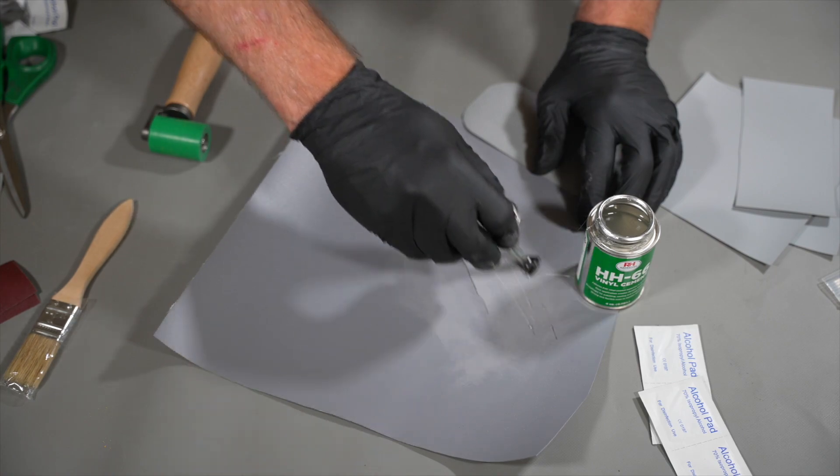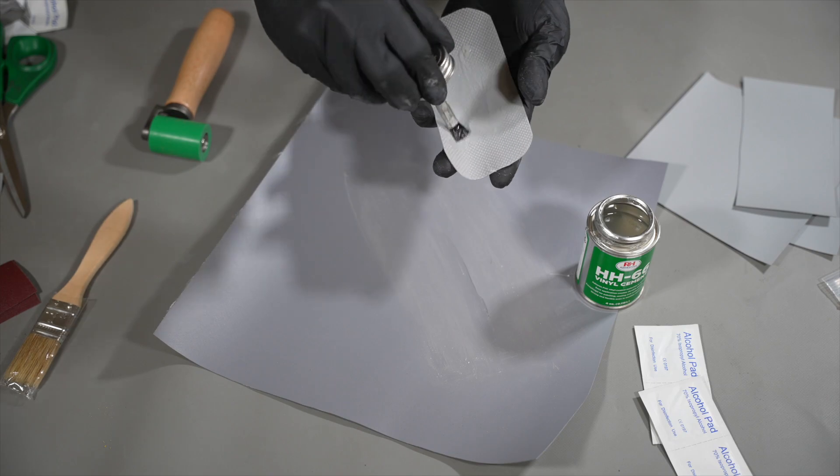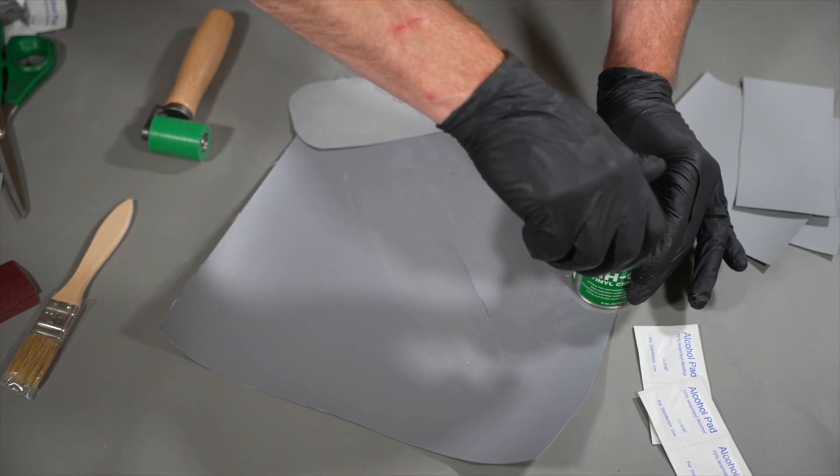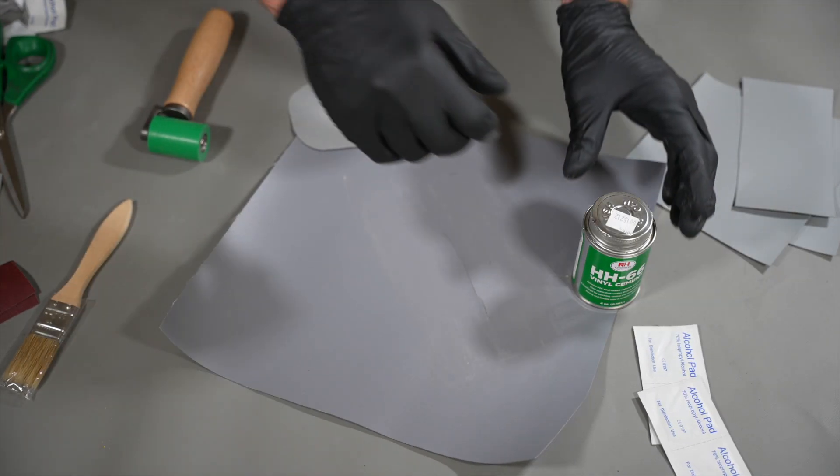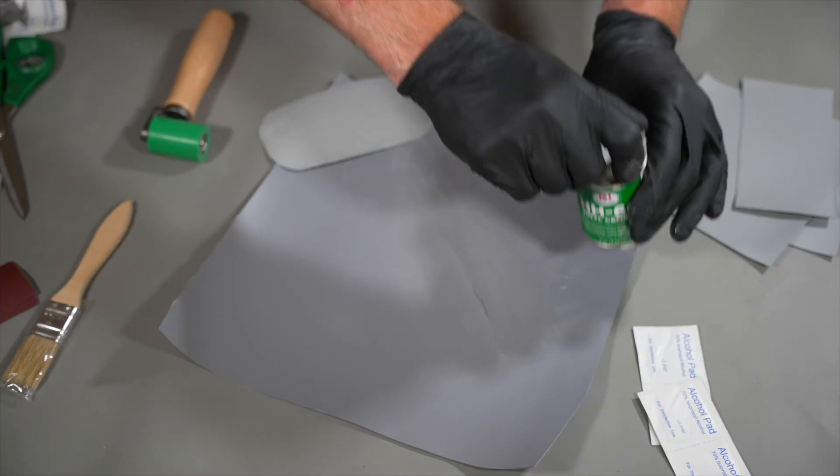To adhere the patch, apply a thin layer of glue to the scuffed areas on both the bladder and the patch. Allow both surfaces to dry entirely. When the first coat of glue is dried, apply a second layer of glue to both surfaces and allow it to dry until it reaches a tacky texture.